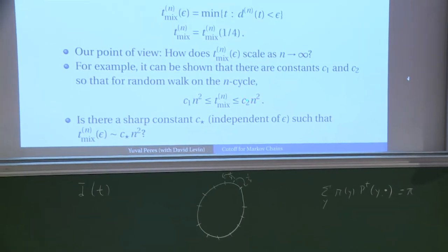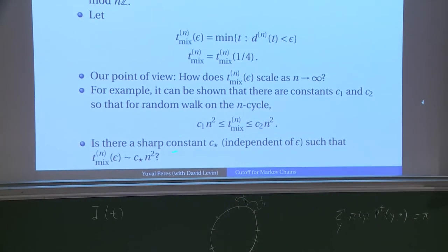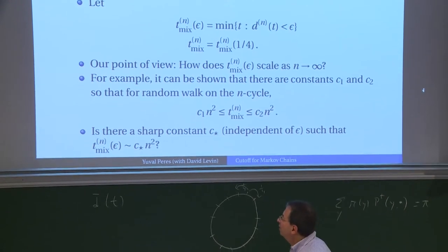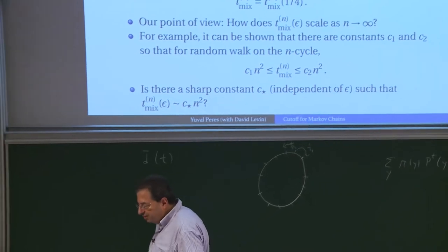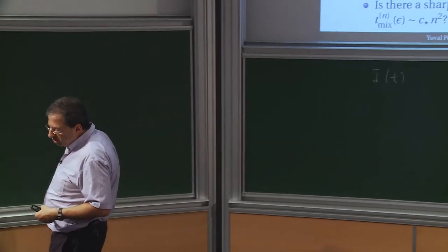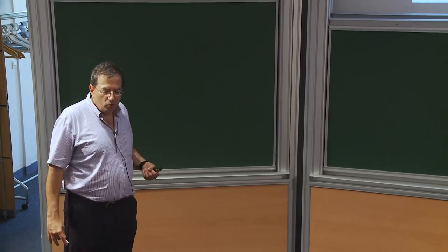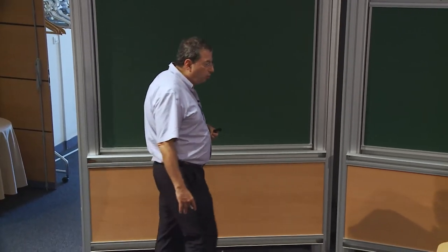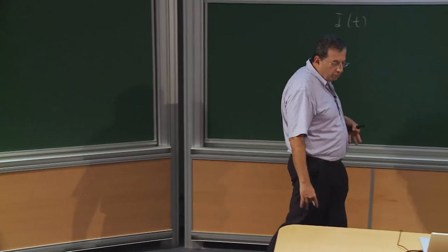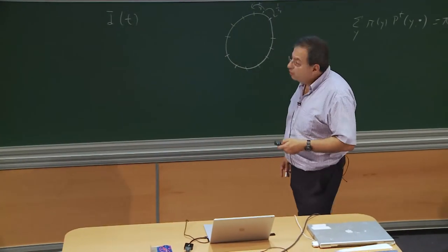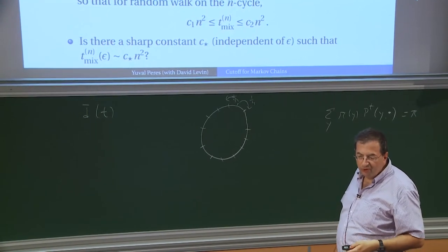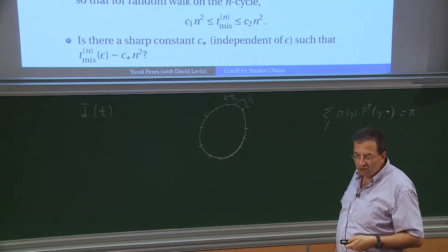The question we want to explore — easy in this case but more interesting in other chains — is how the mixing time depends on epsilon. Fix epsilon and let n tend to infinity. Will the mixing time be asymptotic to a constant times n squared that depends on epsilon or doesn't depend on epsilon? For the cycle, you cannot have such a relation — the constant will have to depend on epsilon. While for other examples which will have cutoff, this constant won't depend on epsilon.